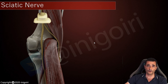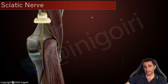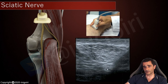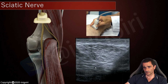Now the distal sciatic nerve. If we follow the nerve distally in the thigh, we will notice its division into its terminal branches — the tibial nerve and the common peroneal nerve. We follow the sciatic nerve, always related with the biceps femoris. This is the two heads of the biceps femoris: the long head with its characteristic trapezoidal shape, and the short head with its quadrangular shape. Between these two heads of the biceps femoris, the sciatic nerve is located deep.